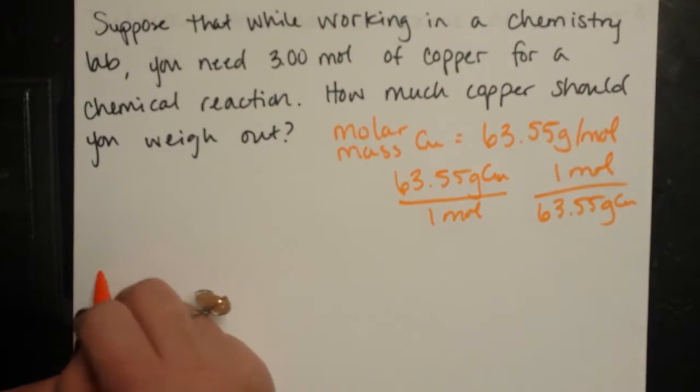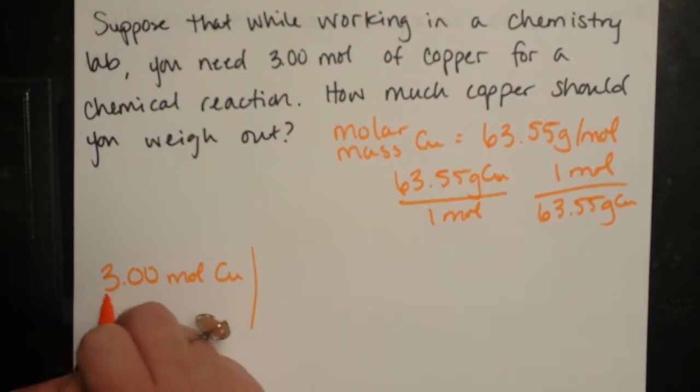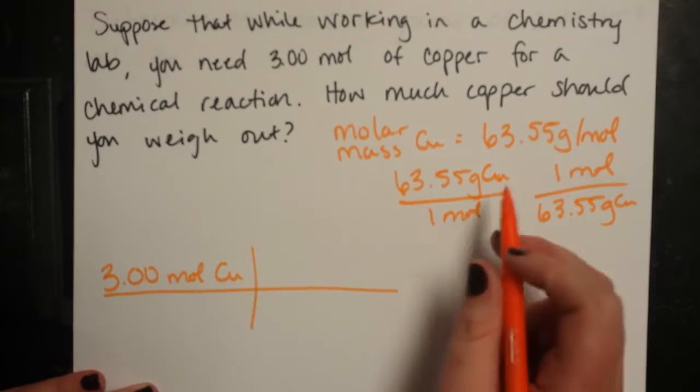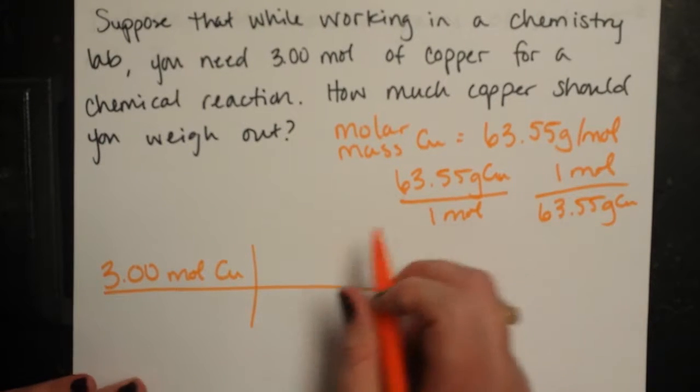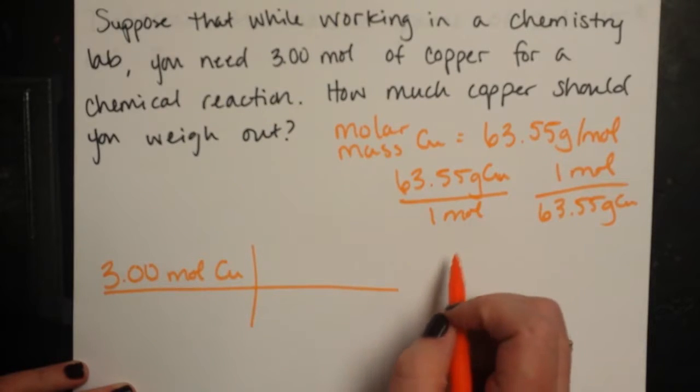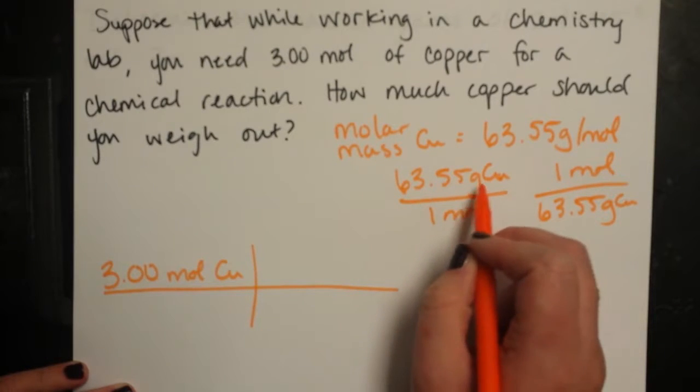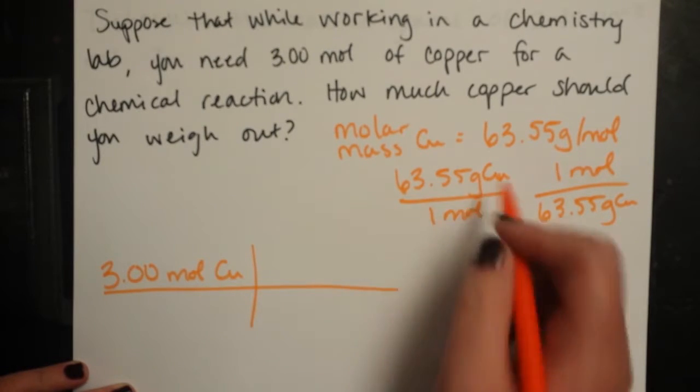So if I need three moles of copper, I can weigh it out. And to figure out how much I need to weigh out, I can use one of these conversion factors from my molar mass. Okay, I would want to make sure that my moles of copper cancel and I'm left with grams of copper as my unit.